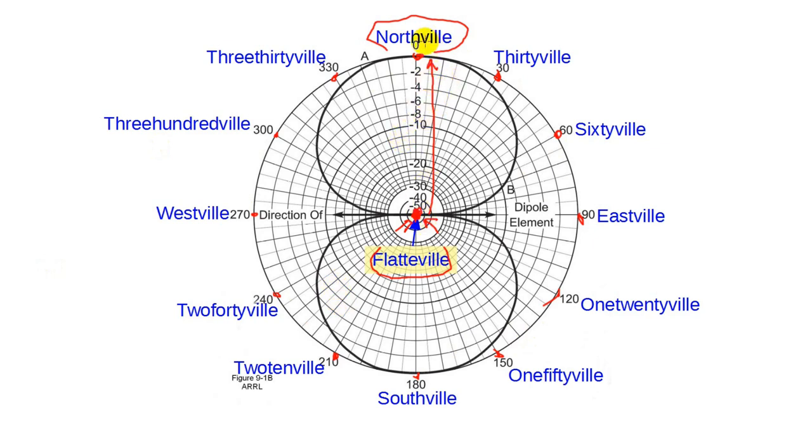At Northville, our receiving station registers an S9 signal coming from Flatville. Our station at Southville gets the same S9 signal. We'll use this as the reference. Now let's look at 30ville. Here we see that the signal level is about 1 dB less than S9. Moving to 60ville, the signal is 6 dB below S9. That would be a signal strength of S8.